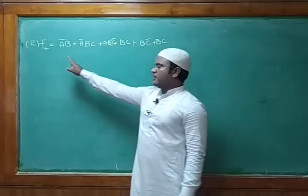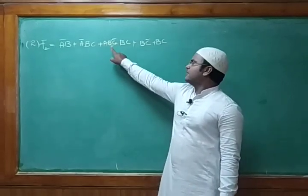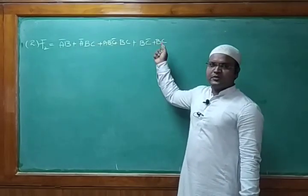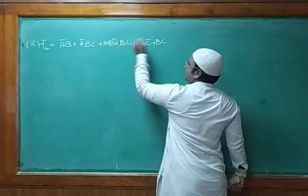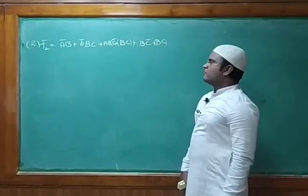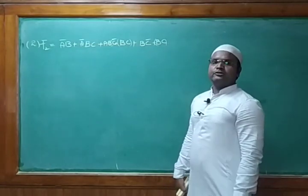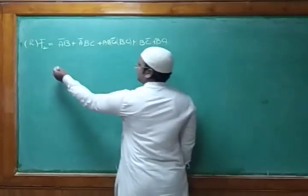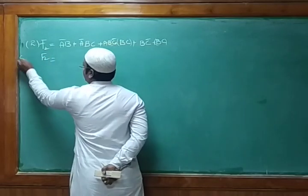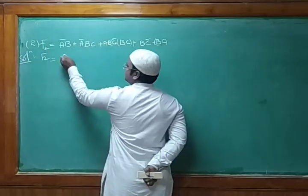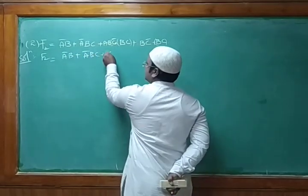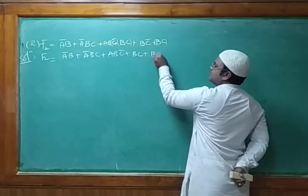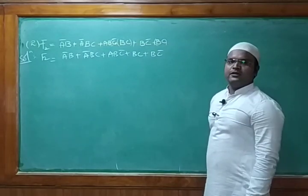Next, the second problem gives f2 = ā·b + ā·b·c + a·b·c̄ + b·c + b·c̄. Notice that there are multiple terms, and b·c appears to be repeated. So the first step is to check whether any bits are repeated. Since b·c appears twice, we write it only once, eliminating the redundant term.